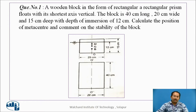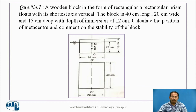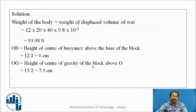A wooden block in the form of a rectangular prism floats with its shortest axis vertical. The block is 40 cm long, 20 cm wide, and 15 cm deep. The depth of immersion is 12 cm. Calculate the position of the metacenter and comment on the stability. The weight of the body equals the weight of the displaced volume of water, which comes to 93.98.